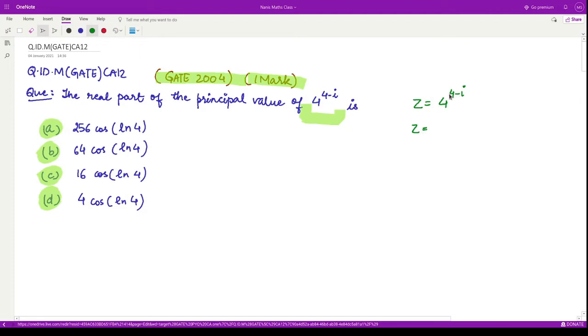Whenever you have a complex number in the power, what you do is define the function like this: e to the power log of 4, times 4 minus iota. We do this because we want to bring this power in front of the log.